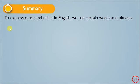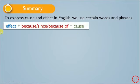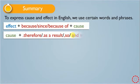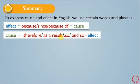The summary of what we talked about today: to express cause and effect in English we use certain words and phrases. The first group structure has the effect at the beginning, then 'because,' 'since,' or 'because of,' followed by the cause. We can also change the position — put the expression at the beginning and move the effect sentence to the end. The second group uses 'therefore,' 'as a result,' and 'so,' followed by the effect, with the cause at the beginning.